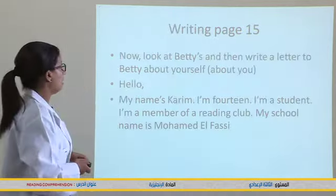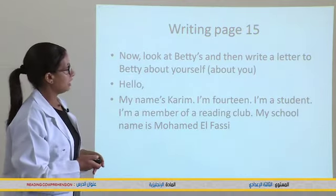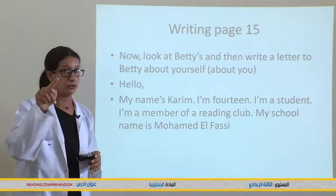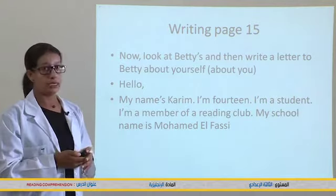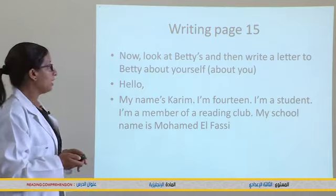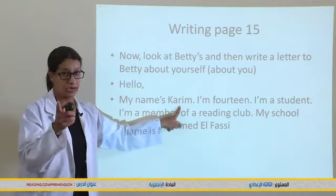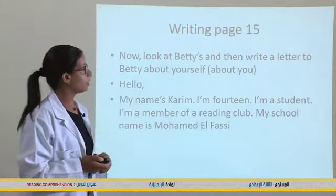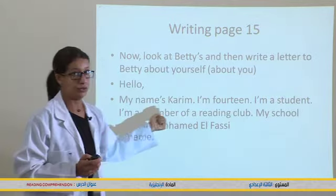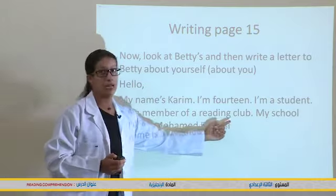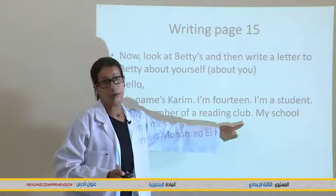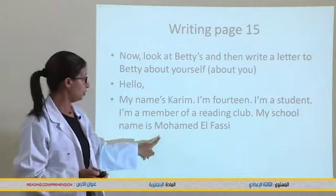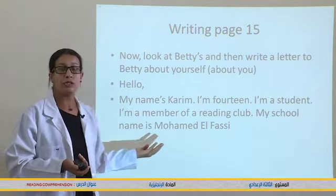The text is very simple and easy. Now look at Betty's letter, then write a letter to Betty about yourself. For example: Hello, my name is Karim — you change Karim to your name. I'm 14 — you change the age to your age. I'm a student — you keep that because you are students. I'm a member of a reading club — you change it to a music club or a sports club.